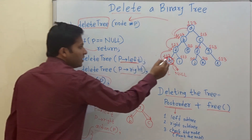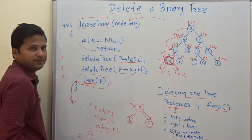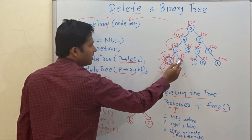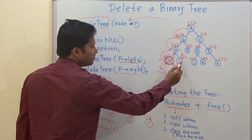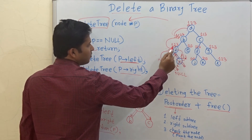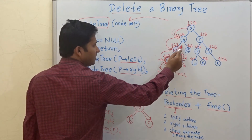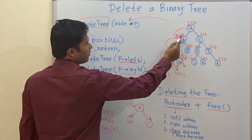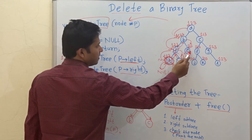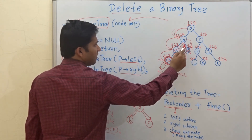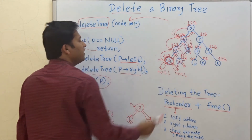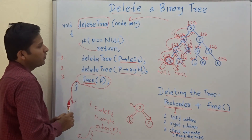We return to parent node D. At D, the first step was already done. Second step: check right subtree — null. Third step: delete D and return. Back at B, two steps are now done. Second step: go to the right subtree. At E, left subtree is null, right subtree is null, so delete E and return. For B, two steps are performed. Third step: delete B and return. This is how we perform the delete_tree function on this binary tree.